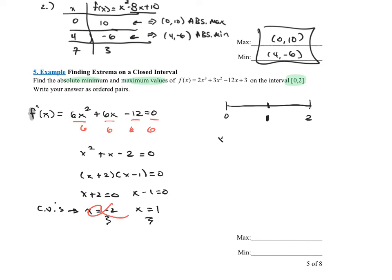So the only three numbers that we're going to be plugging into this function are 0, 1, and 2, the endpoints of the interval and any critical numbers within that interval. Notice I am not plugging them into the derivative function. I am plugging them into the original function, and here I don't just care about the sign. I do care about the actual y value.